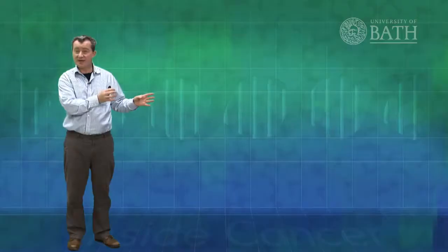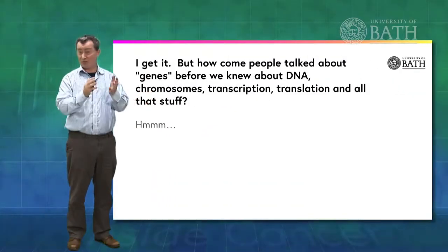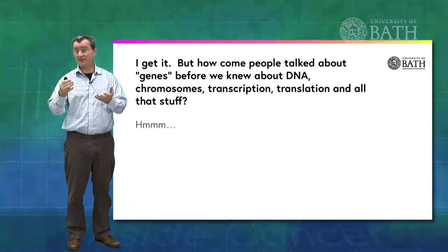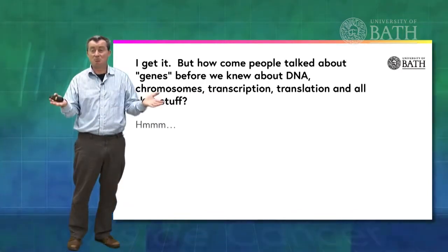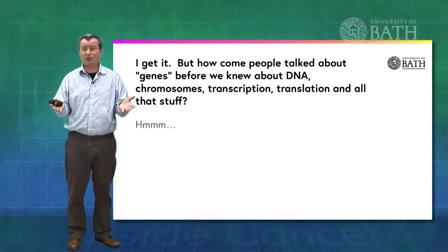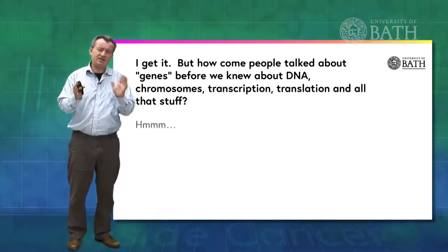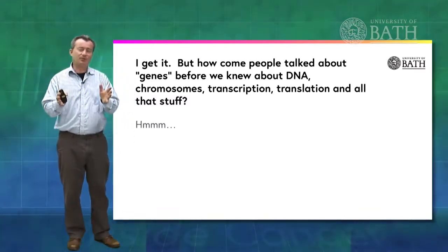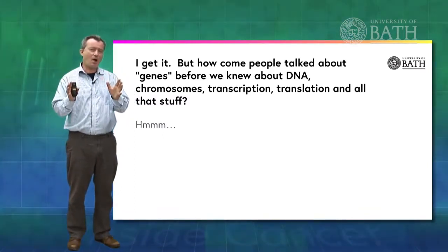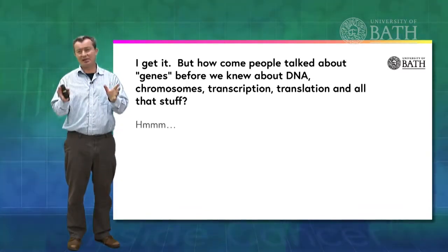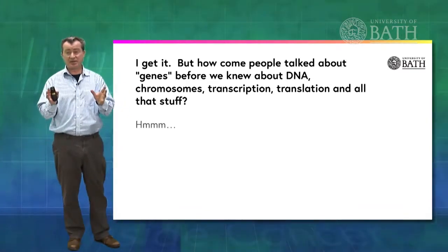It's a sort of okay understanding of a gene — a lot looser than what we started out with, with a bit of DNA which makes a protein. But now we meet an interesting problem. People were talking about genes long before we knew any of that stuff. Before we knew about chromosomes, DNA, transcription, translation, we were talking about genes. How could we have done that? Isn't that a bit of a problem? The answer is: it's a bit of a problem. But let's see why people were talking about genes and how that helps us understand what a gene might be.